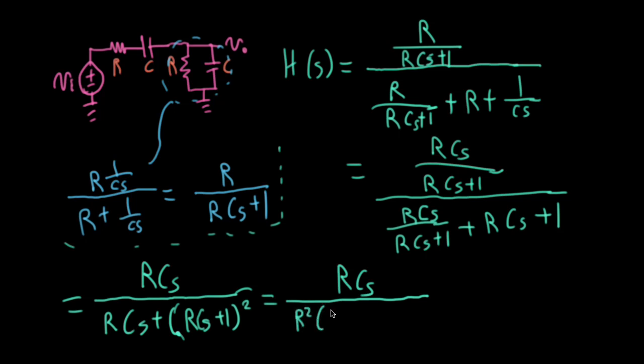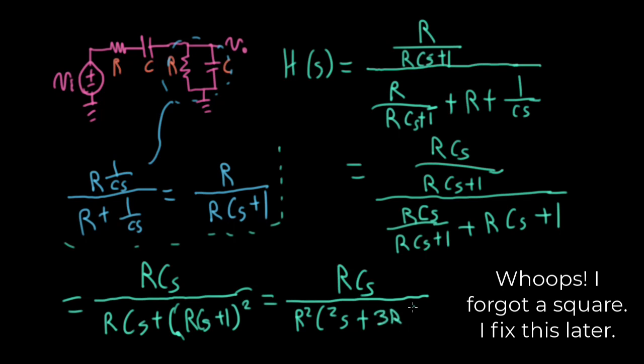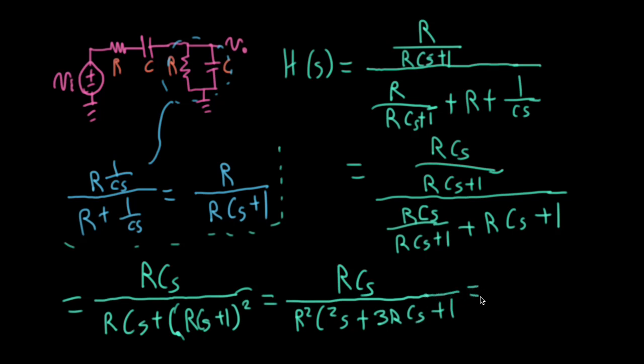Anyway, R squared, C squared, S, and then I'm going to have a 2RCs here, but I'm also adding an RCs, so I'll write 3RCs, and then plus 1. So let me divide everything here by R squared C squared.